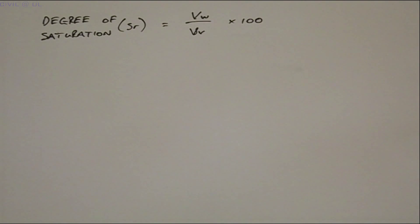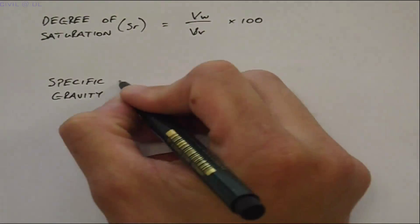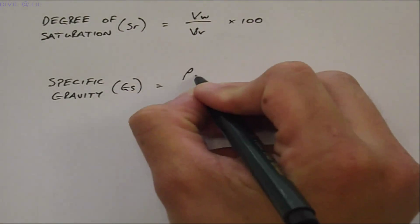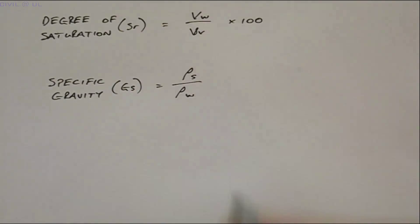Finally, one slightly unusual but extremely useful material property known as the specific gravity, GS. GS is the ratio of how heavy a soil particle is relative to an equal volume of water. So GS is equal to the density of the soil particle divided by the density of water.